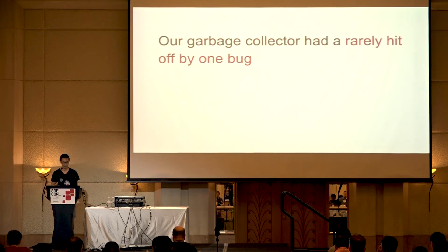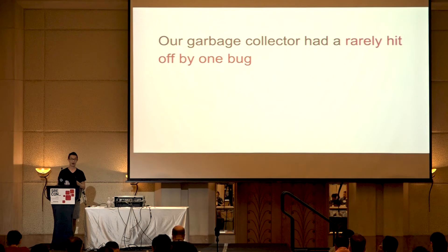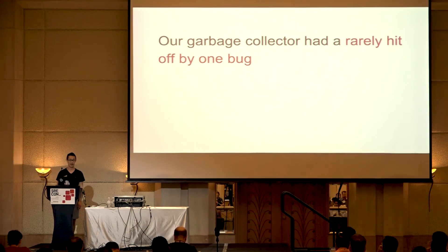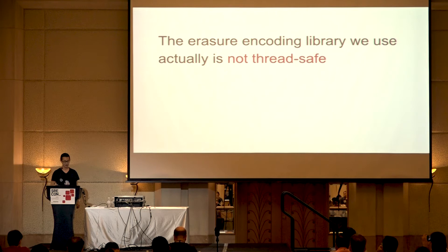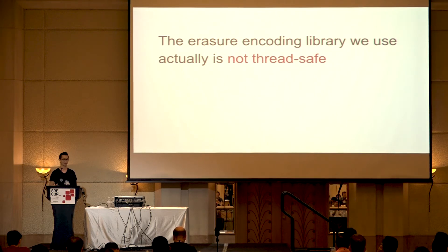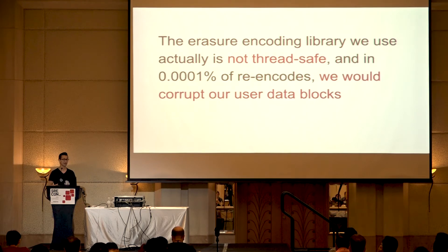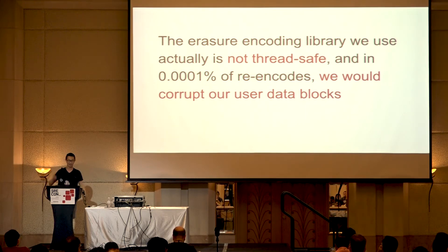Let's think of some kinds of bugs. Our garbage collector had a rare off-by-one bug, and the result is we remove user data that shouldn't have been deleted. Yikes. Or the erasure encoding library we use — it's actually not thread-safe, maybe not documented anywhere. And what happens is, in a small portion of re-encodes, we'd corrupt our users' data. Yikes.